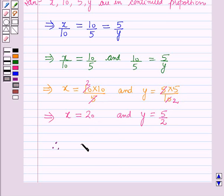Therefore, the values of x and y are x is equal to 20 and y is equal to 5 by 2.